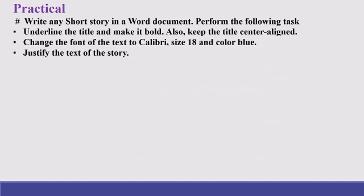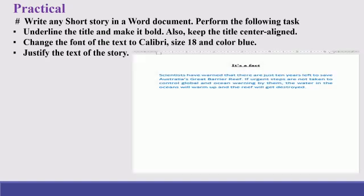Write any short story in a Word document. Underline the title and make it bold. Also, keep the title center aligned. Change the font of the text to Calibri, size 18, and color blue. Justify the text of the story. Your page will look something like this. You can practice at home. And don't forget to visit the school website for questions and answers of this chapter.